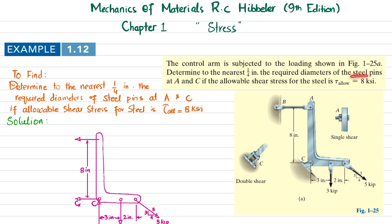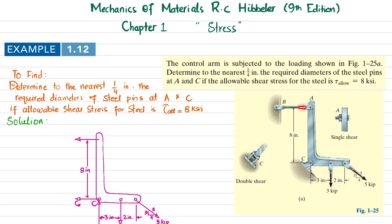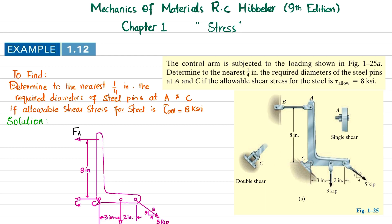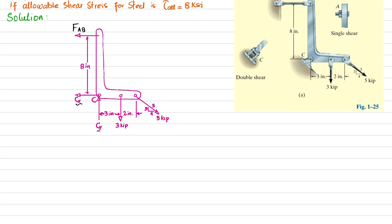We have to determine the diameter of steel pins at A and C to the nearest 1/4 inch. To start the solution, we need the forces acting on each pin. Taking the free body diagram of this arm, due to the loads, the arm will deflect, so member FB applies force FAB on this arm. The pin at C will exert a vertical force Cy as well as a horizontal force Cx. We will find FAB, Cx, and Cy using equations of equilibrium.